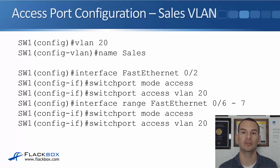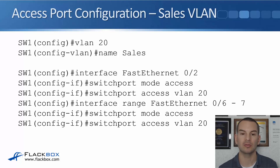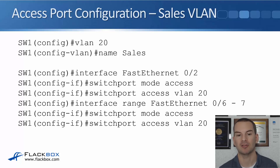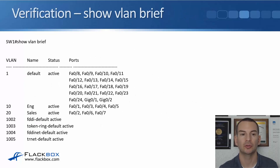We also need to configure the sales VLAN. We say 'vlan 20' as the number for this example, with name 'sales'. Then 'interface fastethernet 0/2', 'switchport mode access', 'switchport access vlan 20'. And 'interface range fastethernet 0/6-7', again 'switchport mode access' and 'switchport access vlan 20'. That's how you configure the access ports.